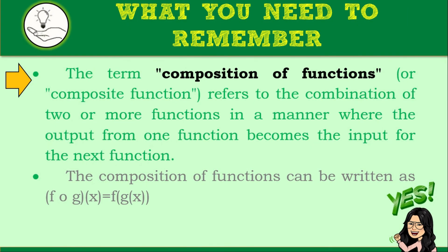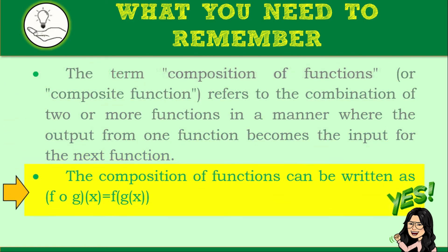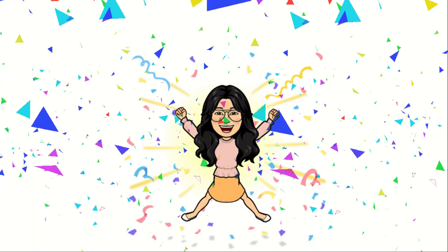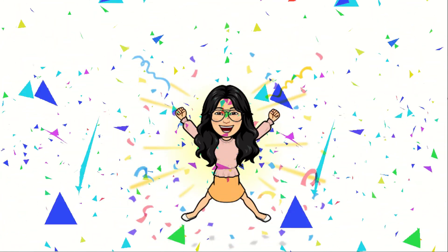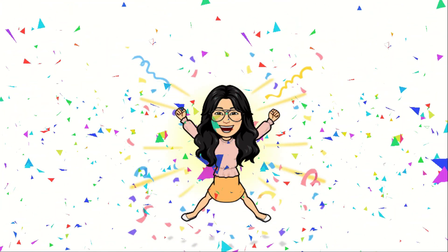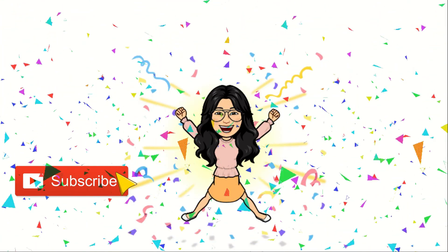What you need to remember: the composition of functions, also known as the composite function, refers to the combination of two or more functions where the output from one function becomes the input in the next function. The composition of functions can be written in the notation shown. We are done with Lesson 3.5 — good job for today, and see you in the next lesson!